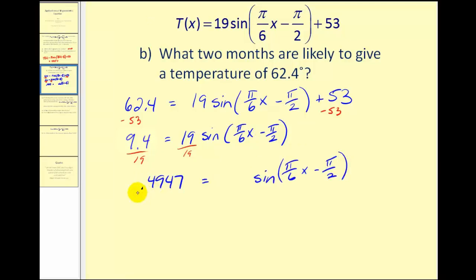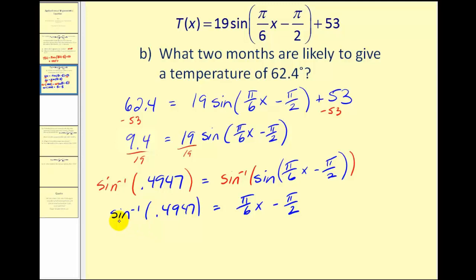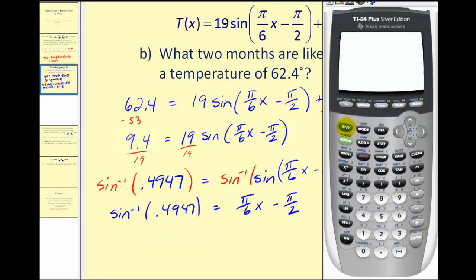Now what we can do is take the inverse sine of both sides. So on the left, we have the inverse sine of point four nine four seven equals inverse sine of sine of this quantity, which will give us just this quantity. Let's go to the calculator and evaluate this. Inverse sine of point four nine four seven. This is going to give us an angle of approximately point five one seven five radians.